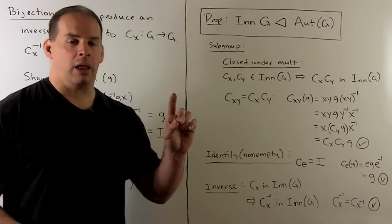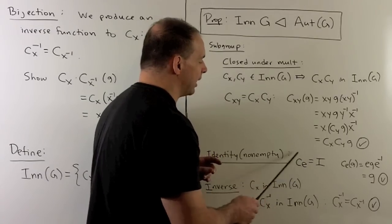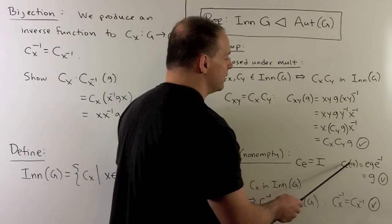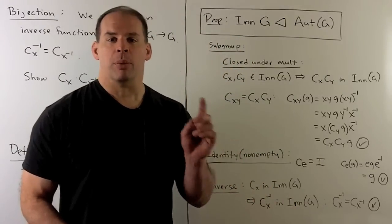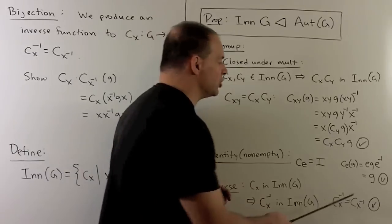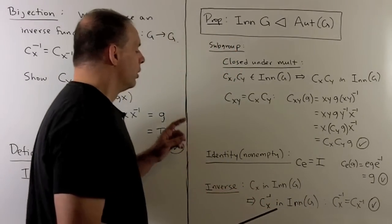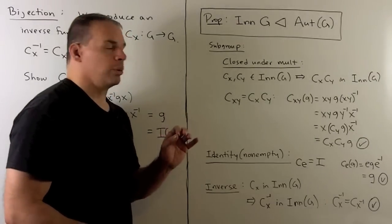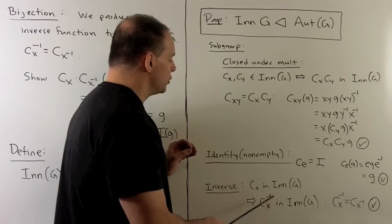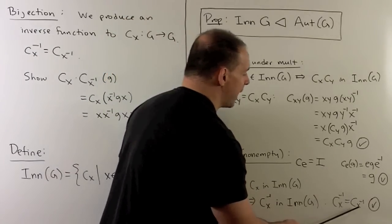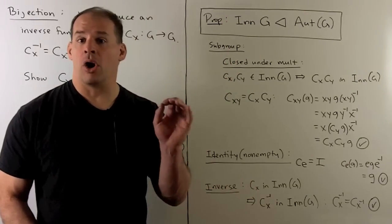For the identity element: the identity map is given by conjugation by the identity element. Applying c_e to any g gives ege⁻¹ = g, which is the identity map. For closure under inverses: we've already shown the inverse function of c_x is c_{x⁻¹}, so the inverse is again an inner automorphism. That shows we have a subgroup.